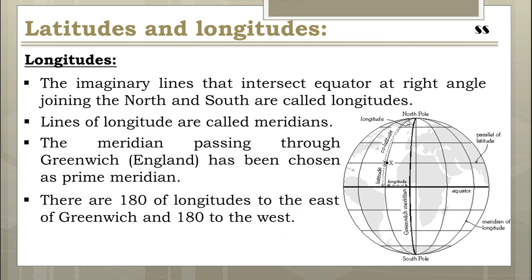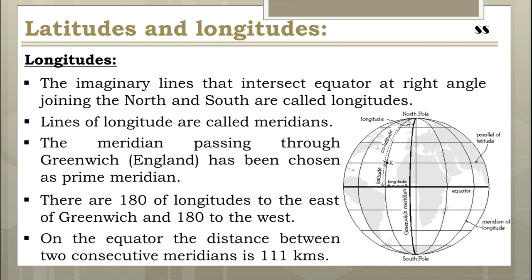There are 180 degrees of longitude to the east of Greenwich and 180 to the west, making 360 longitudes in total. The zone between the prime meridian and 180 degrees east longitude is called the eastern hemisphere, and the opposite zone is called the western hemisphere. The distance between two consecutive longitudes decreases gradually with distance from the equator, because the meridians converge at the two poles. On the equator, the distance between two consecutive meridians is 111 kilometers.